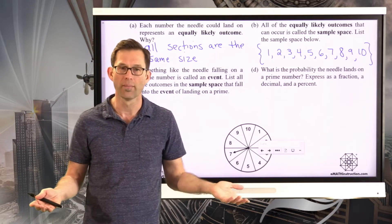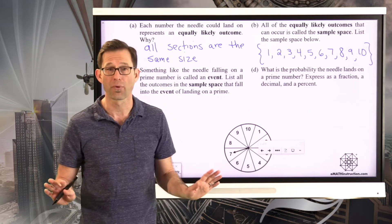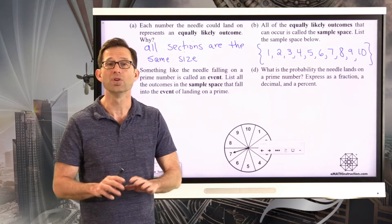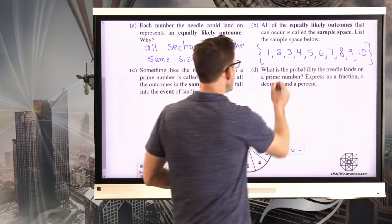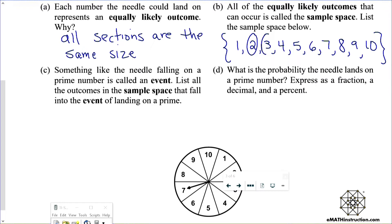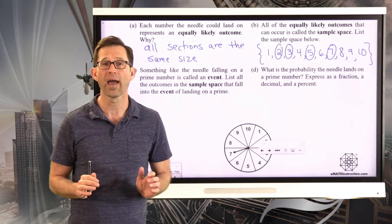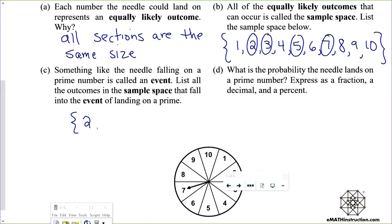To identify the prime numbers, remember that 1 is not prime. A prime number has no divisors other than 1 and itself. So among the numbers 1 through 10, the primes are 2, 3, 5, and 7. The set containing all equally likely outcomes in our event is therefore {2, 3, 5, 7}.